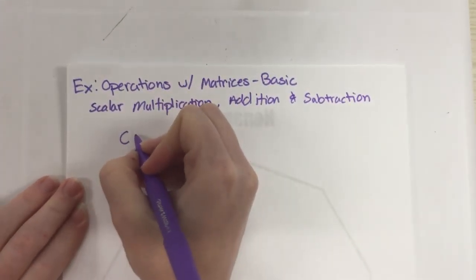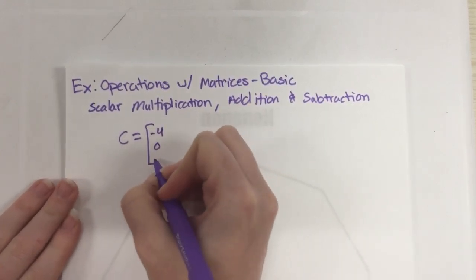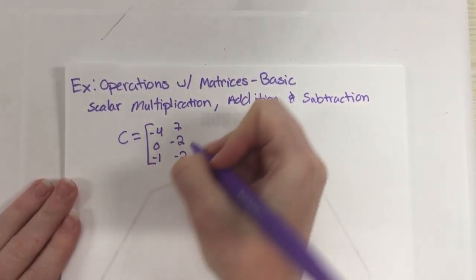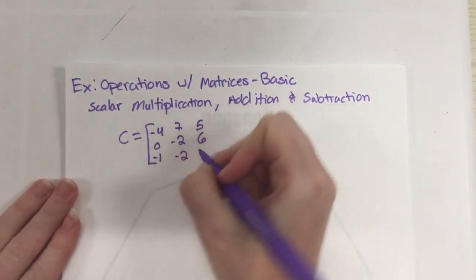So we're going to take matrix C, and this is a 3 by 3. So I've got negative 4, 0, negative 1, 7, negative 2, negative 2, 5, 6, and 2.